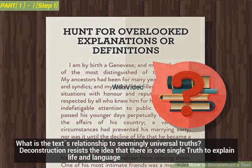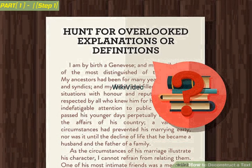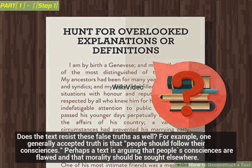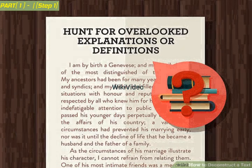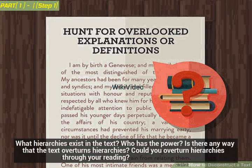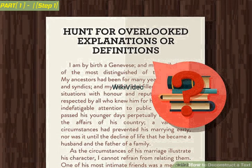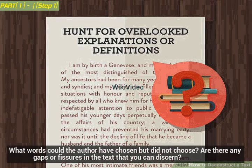What is the text's relationship to seemingly universal truths? Deconstruction resists the idea that there is one single truth to explain life and language. Does the text resist these false truths as well? For example, one generally accepted truth is that people should follow their consciences — perhaps a text argues that people's consciences are flawed and that morality should be sought elsewhere. What hierarchies exist in the text? Who has the power? Is there any way that the text overturns hierarchies? Could you overturn hierarchies through your reading? What words could the author have chosen but did not choose? Are there any gaps or fissures in the text that you can discern?